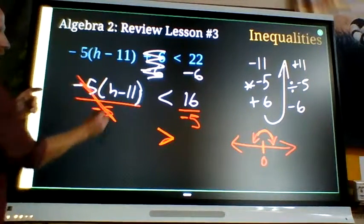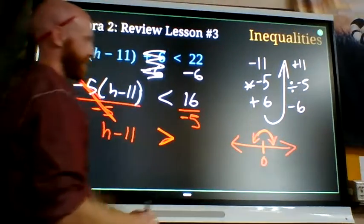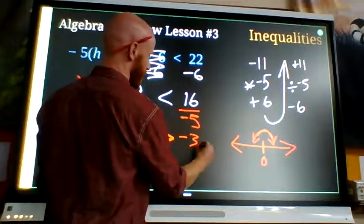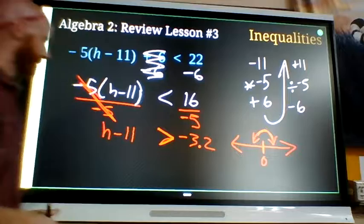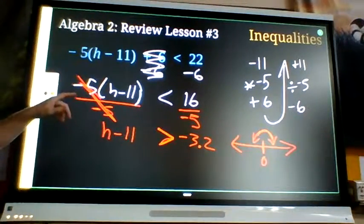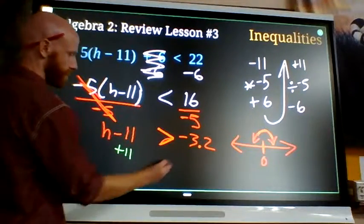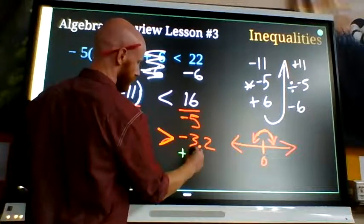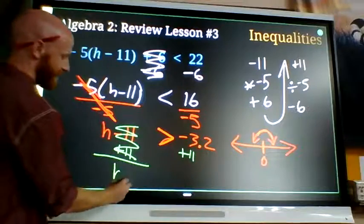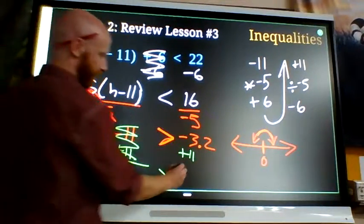Negative 5 divided by negative 5, 1 cancels out. H minus 11 is left. 16 divided by negative 5 is negative 3.2. Next move, add 11. Minus 11 plus 11 cancel. H is bigger than 7.8.